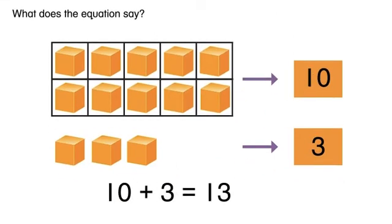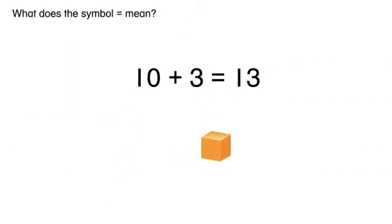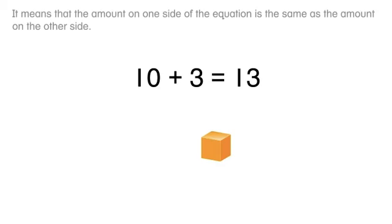What does the equation say? The equation says ten plus three equals thirteen. What does the symbol mean? It means that the amount on one side of the equation is the same as the amount on the other side.